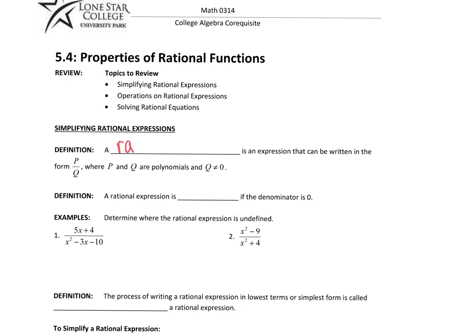A rational expression is an expression that can be written in the form P over Q, where P and Q are polynomials.